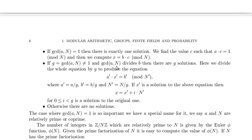It says that if the GCD divides b, then there are g solutions — that's why you can divide b. If x' is a solution to the above equation, then x equals x' plus i·n' for 0 ≤ i < g is a solution of the original equation. Otherwise, there are no solutions.